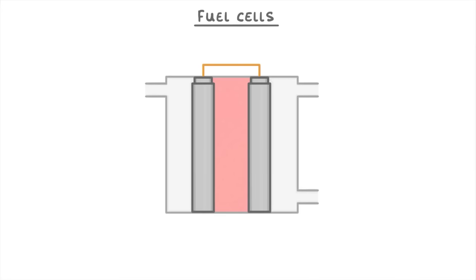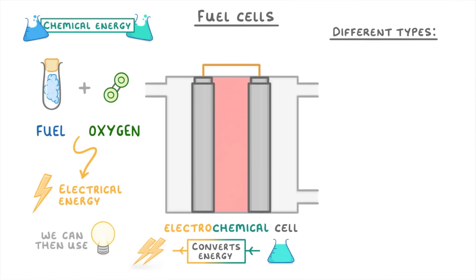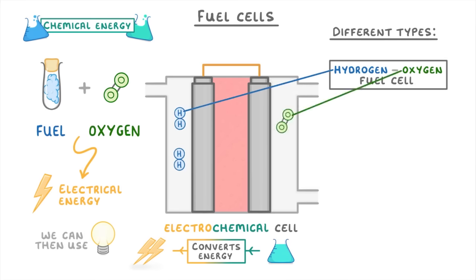Now, a fuel cell is a type of electrochemical cell, which means that it converts energy between electrical and chemical forms. More precisely though, they convert the chemical energy of a fuel and oxygen into electrical energy that we can then use to power things. There are a few different types of fuel cells, but the most common is the hydrogen-oxygen fuel cell, which combines hydrogen and oxygen to form water, at the same time as generating lots of electrical energy.